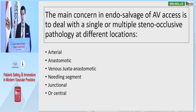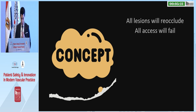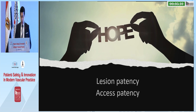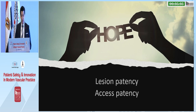The main concern in endovascular salvage of AV access is to deal with single or multiple steno-occlusive pathology at different locations: arterial site, anastomotic site, venous juxta-anastomotic, needling segment, junctional, or central. In spite of the concept that all lesions will re-occlude and all access will fail, we should target lesion patency and access patency.